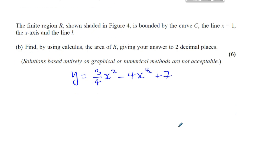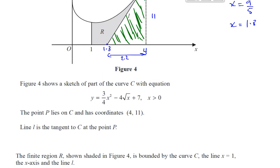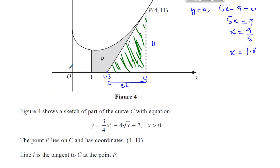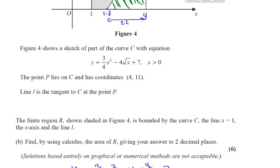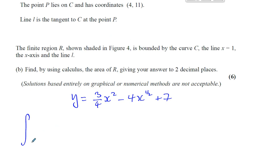So I need to integrate that function between, as we said, the points 1 and 4. I'll give you the area under the curve all the way, all the area under the curve between 1 and 4. So between 1 and 4, I need to integrate this function, which is 3 over 4 X squared minus 4 X to the power of a half plus 7. And we integrate that with respect to X.